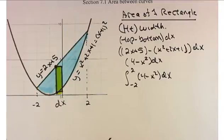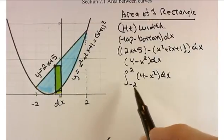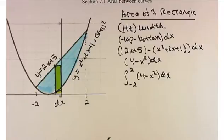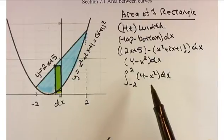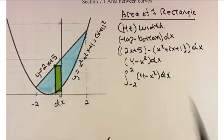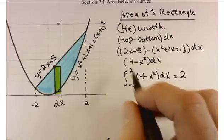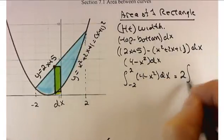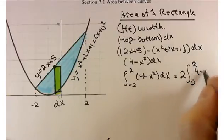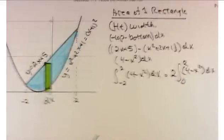Now I want to practice something I pointed out in section 5.5. We've got a symmetric interval — negative 2 to 2. When you have a symmetric interval and an even or odd function, there are some shortcuts. This is an even function: if you graph 4 minus x squared, it's a parabola symmetric with respect to the y-axis. So instead of integrating from negative 2 to 2, we'll do twice the integral from 0 to 2 of 4 minus x squared. It makes a little nice difference.